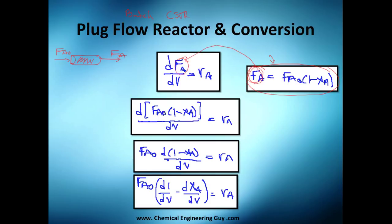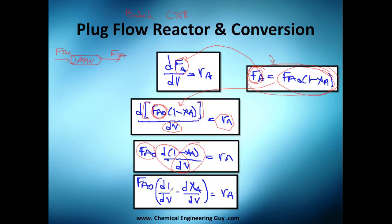When we substitute the conversion expression into the design equation, we place it into the molar flow term. The molar flow FA0 is a constant, so we take it outside the derivative. We then get the derivative of (1 minus xA) with respect to volume, which we can split into two separate derivative terms.